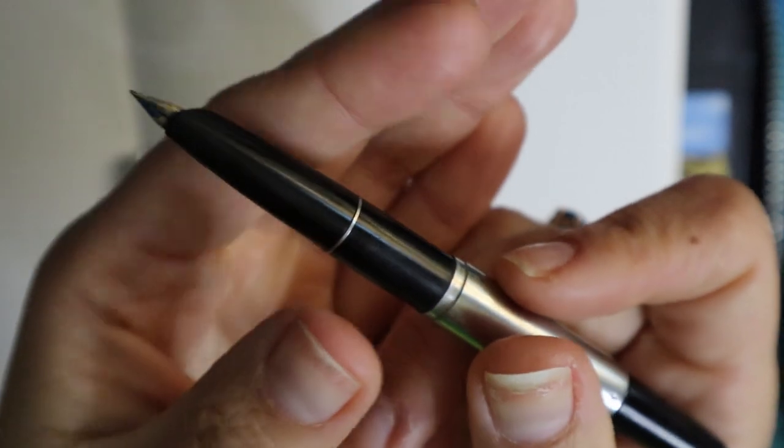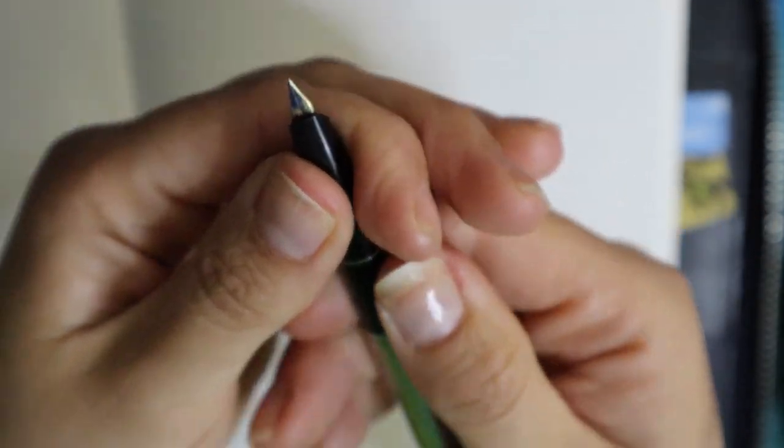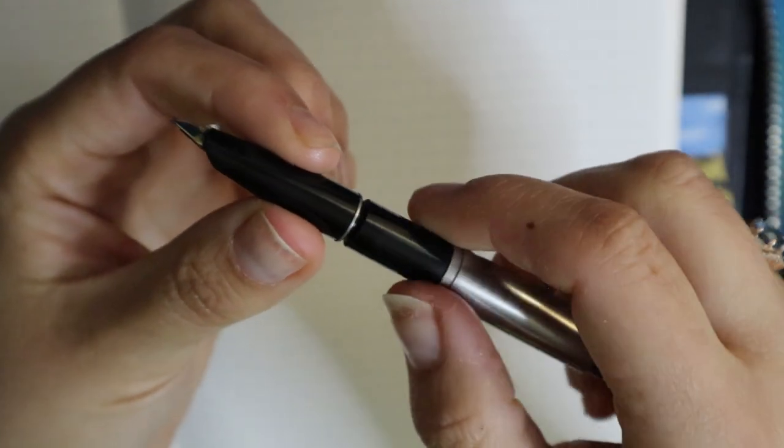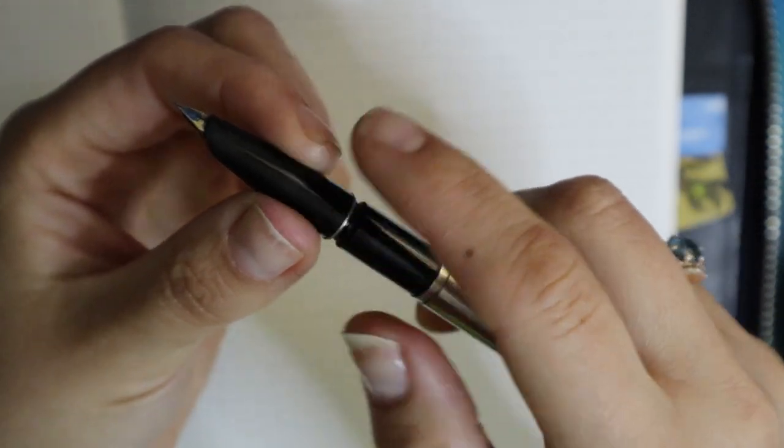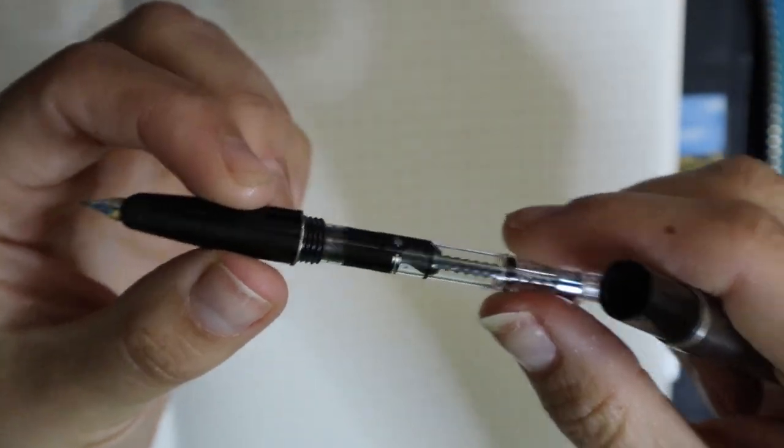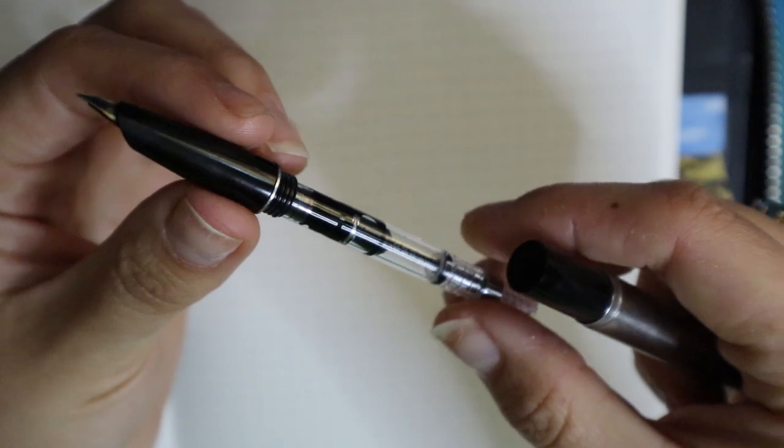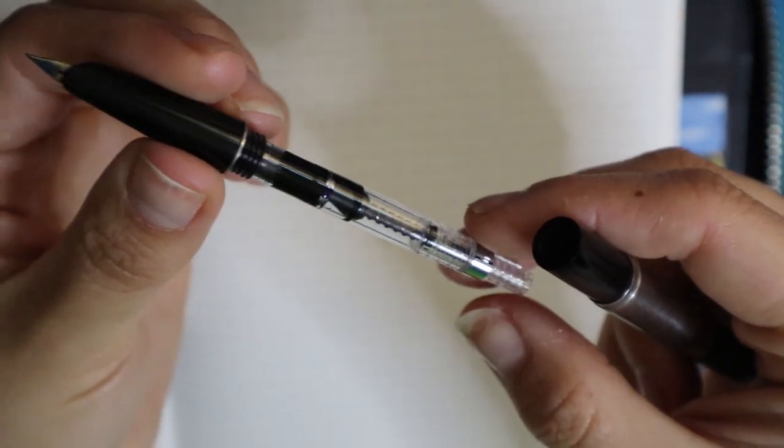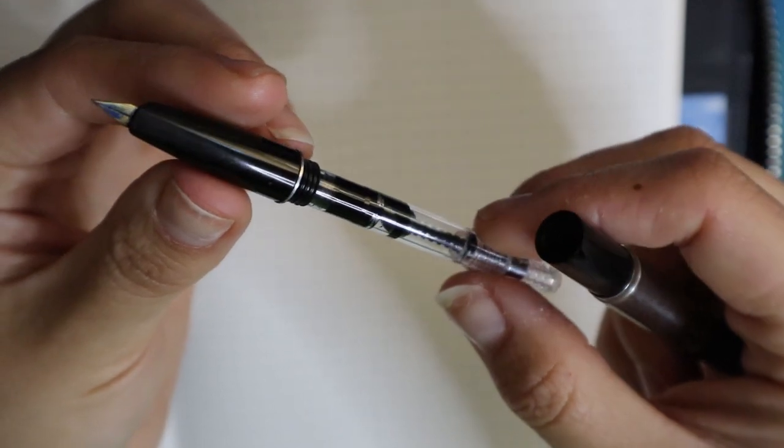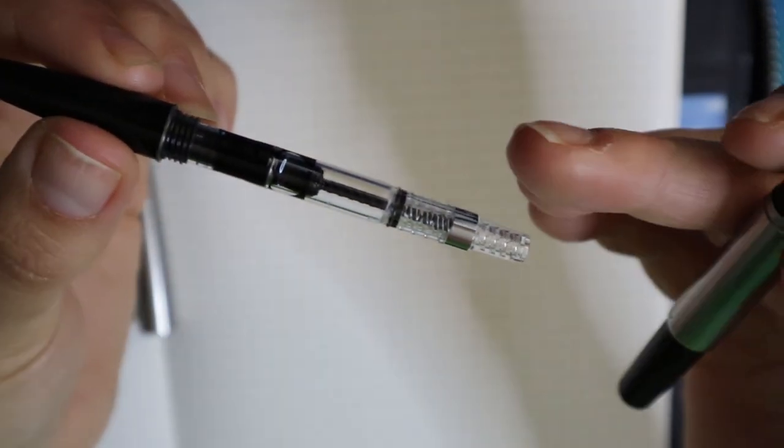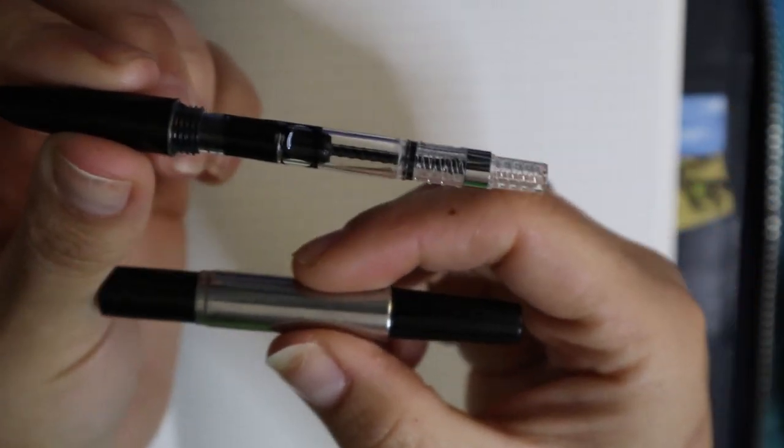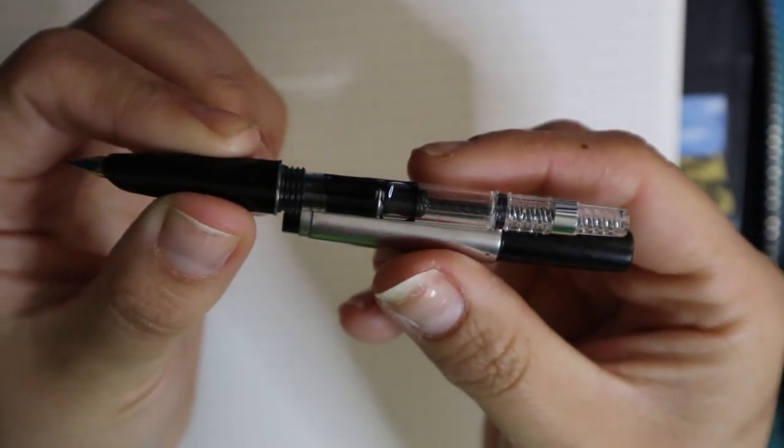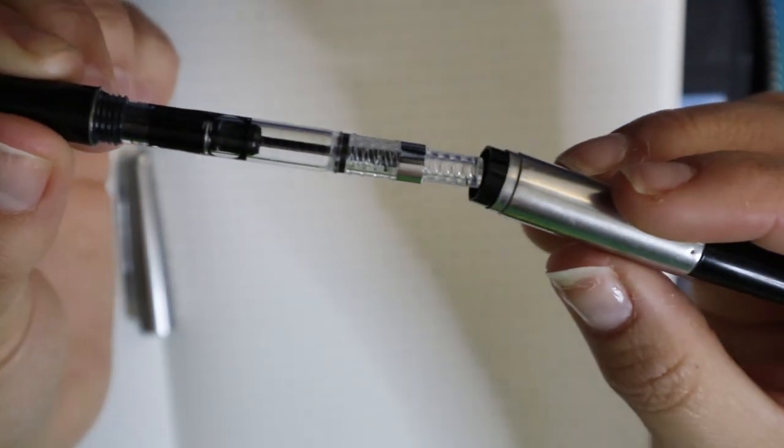You have a silver ring right here. And then you can unscrew the actual section. This is not the section. This is the actual section. And it will reveal a converter. This is, I think, a modern converter. It's just a Con-40 converter that I dislike the most in the world. And it just fits in here, even though it's quite a small pen, especially when it's all tucked in. But it works.